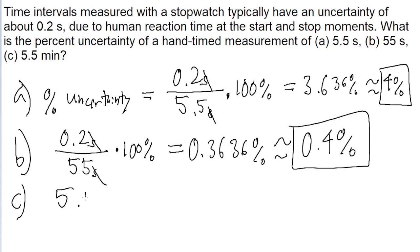For part C, the first thing we've got to do is convert 5.5 minutes into seconds. So 5.5 minutes, there are 60 seconds in one minute, so we multiply 60 seconds by 5.5 minutes, and that's about 330 seconds.